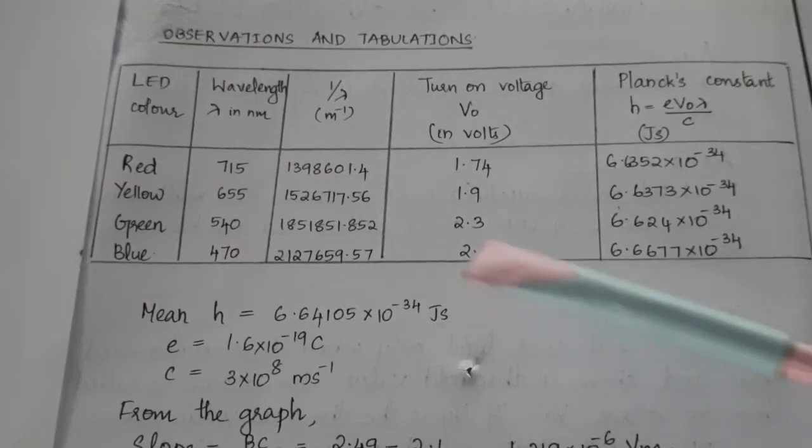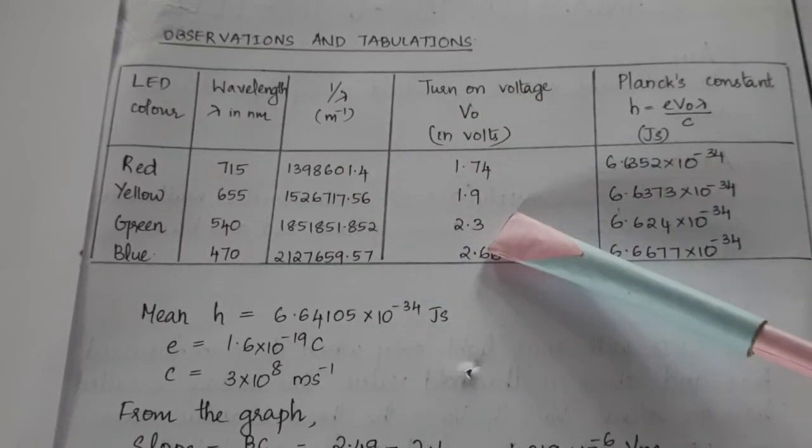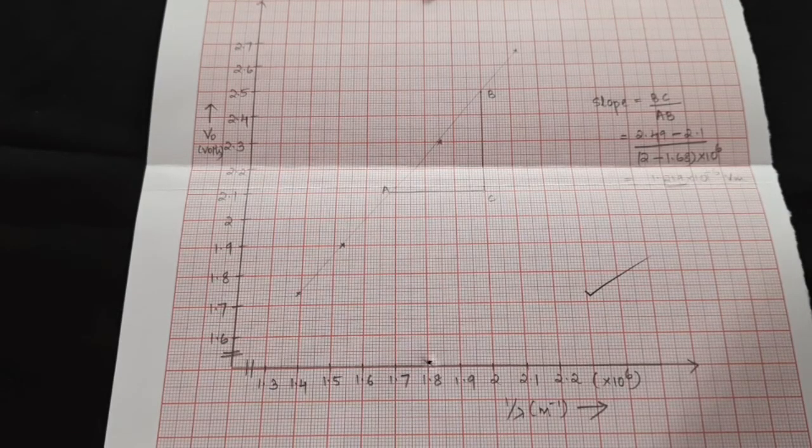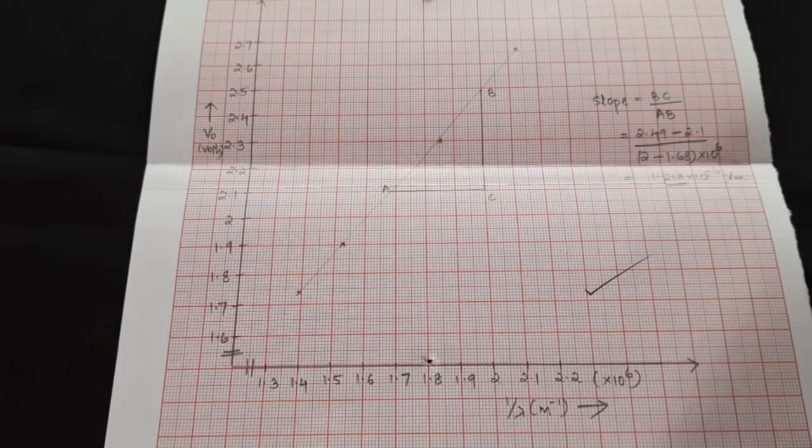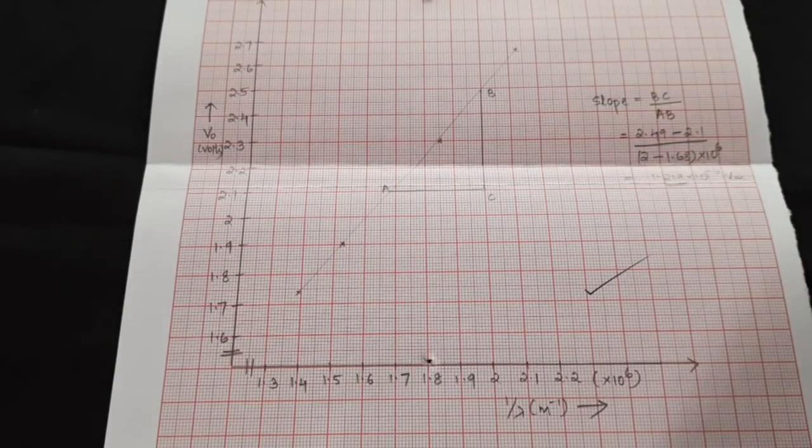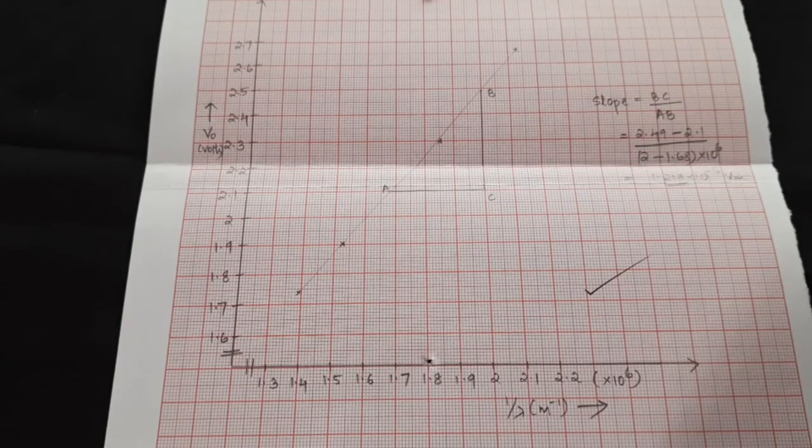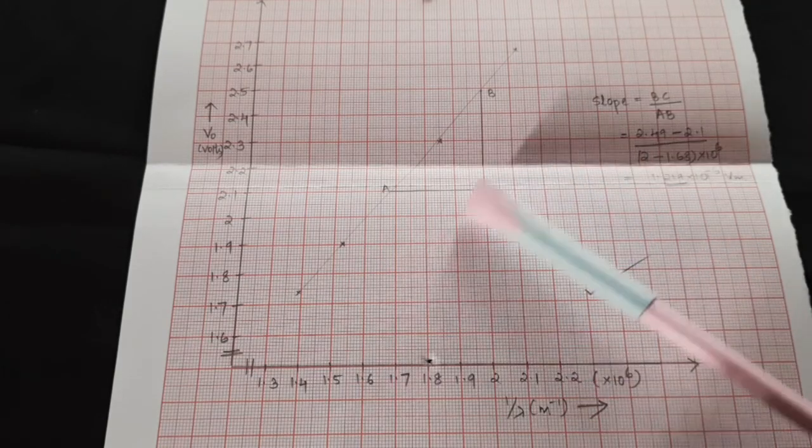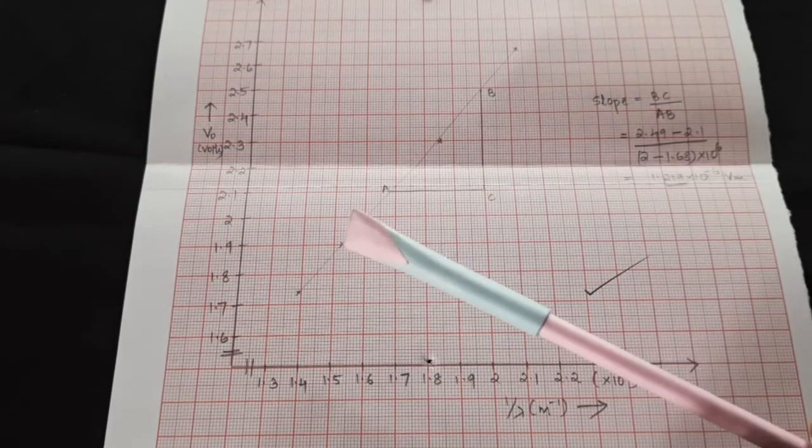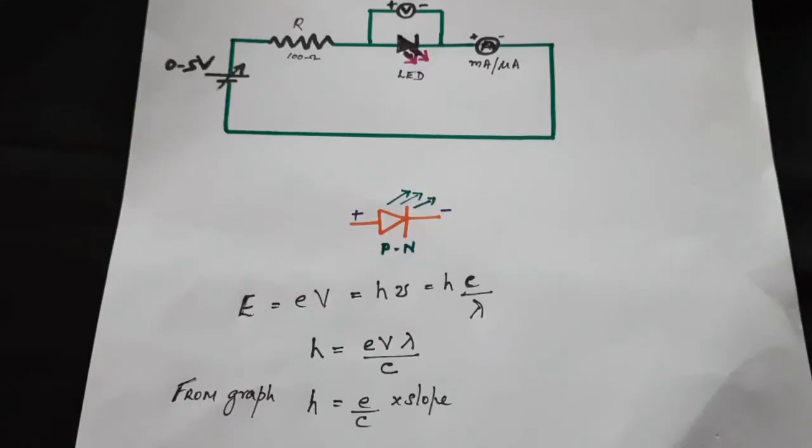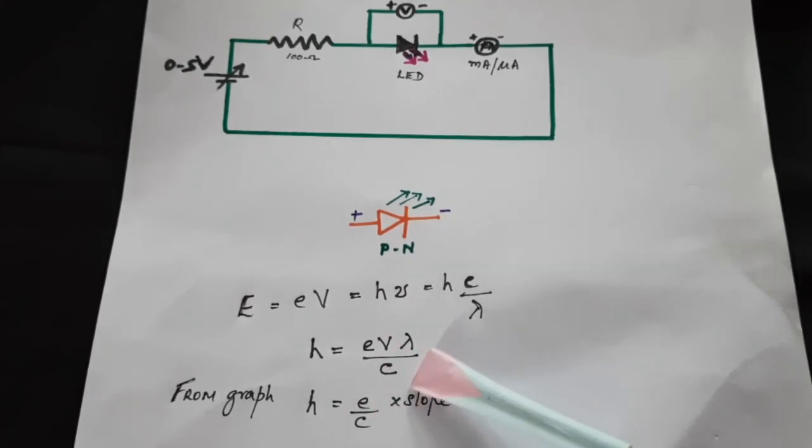If we plot 1 by lambda versus the voltage V, turn-on voltage V, then we can get the slope and calculate the H from the graph also. This is a sample graph where 1 by lambda is plotted against V naught or V, the turn-on voltage. Here we are getting the various points for various colored LEDs and from the slope, slope here is taken as BC by AB. You can evaluate the slope and use it to calculate H. From the graph, H can be evaluated as E by C into slope.